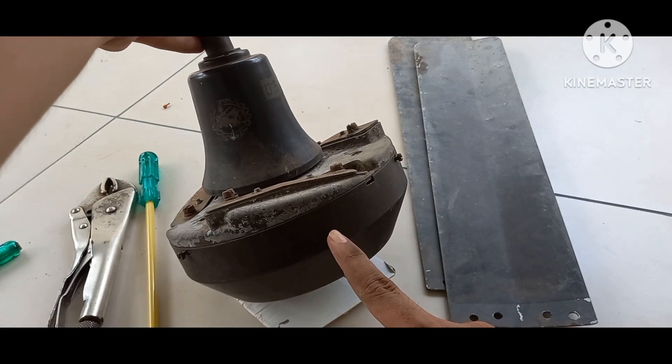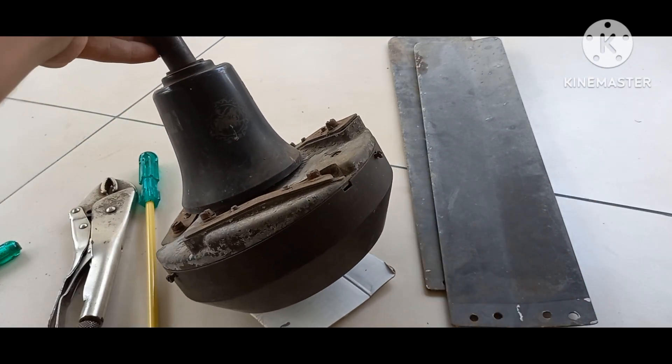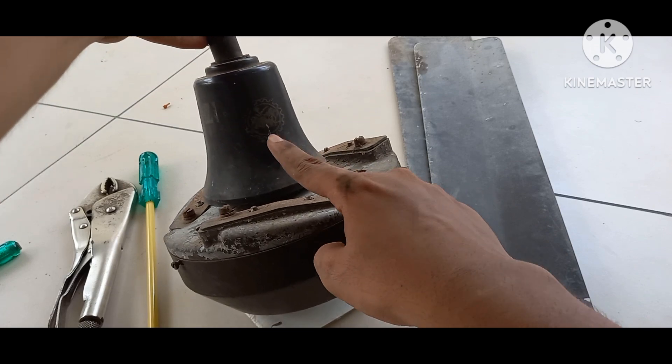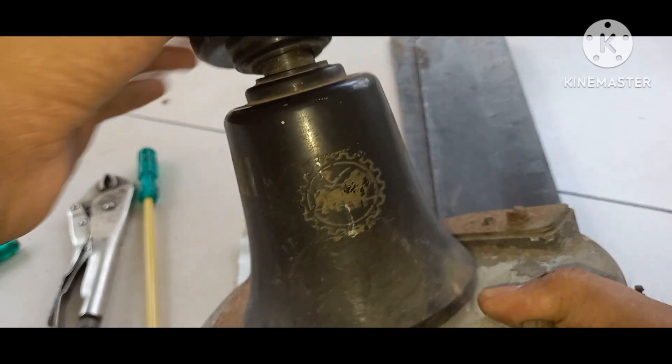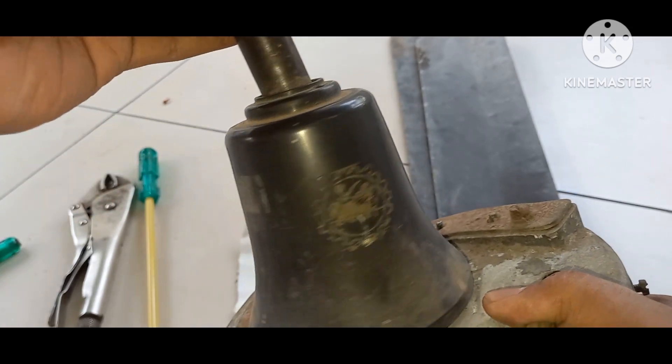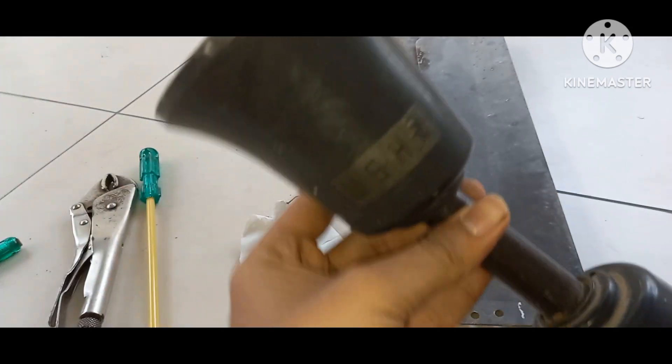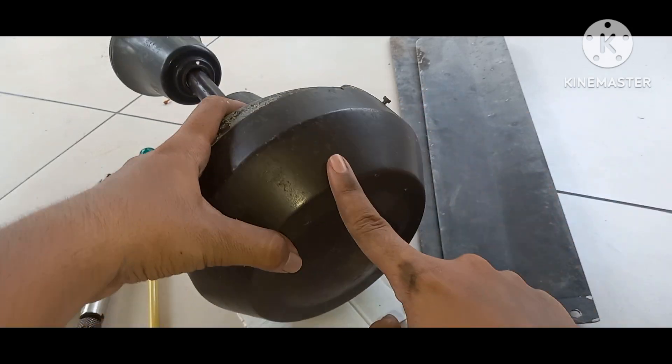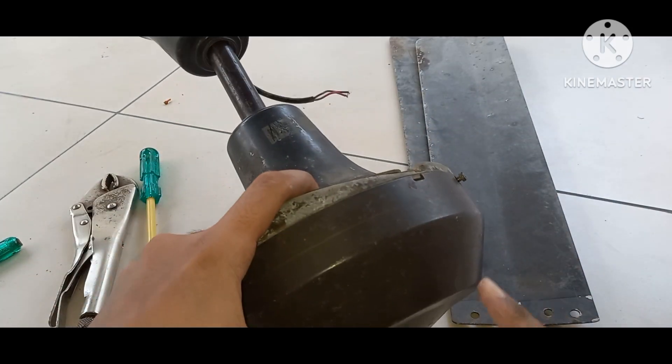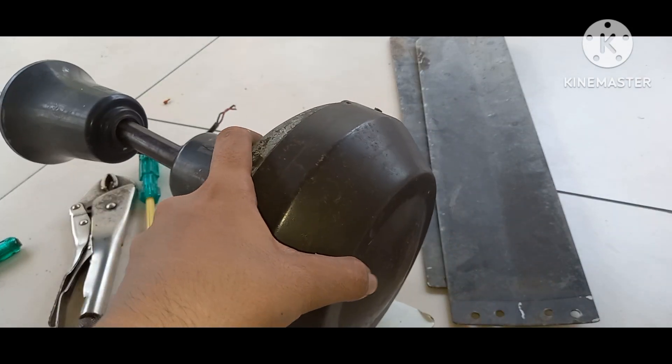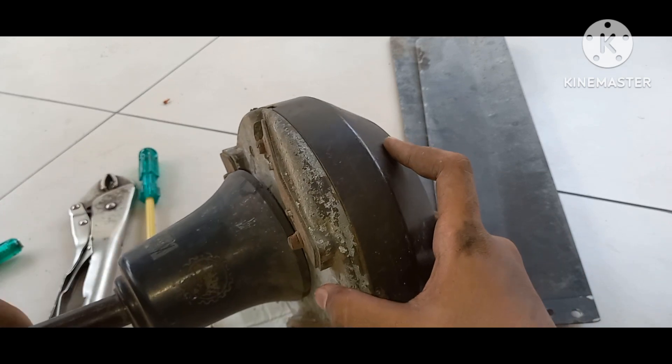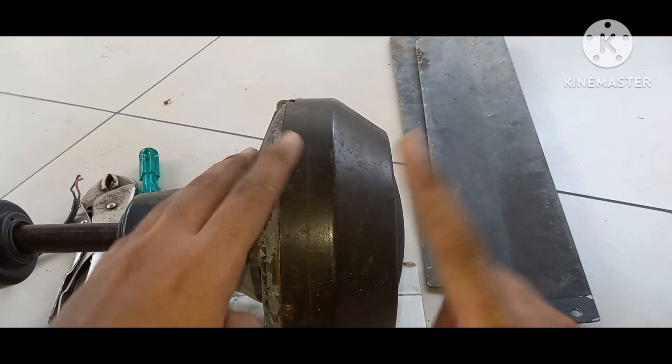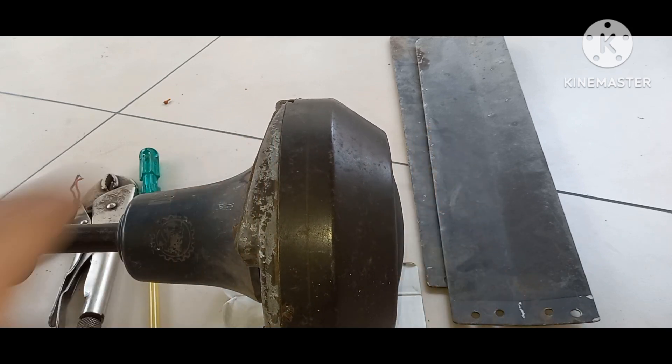This fan is exclusively made for the Federal Bank of India. You can see the signature or sign of the Federal Bank - let me turn on flash - Federal Bank and USHA. The construction of this motor is similar to that of Orient Deluxe or something like that. This is a false cover. I have to clean this fan, so let me open and show you the motor.